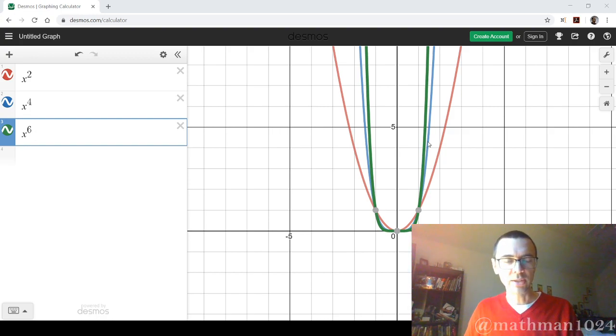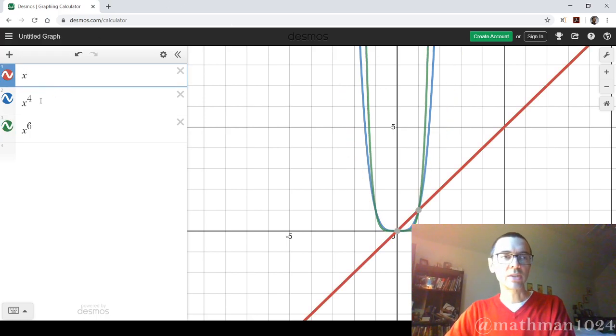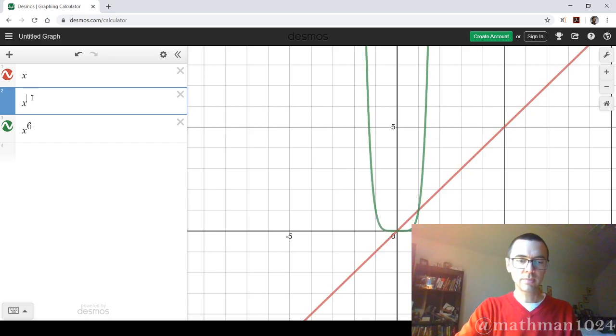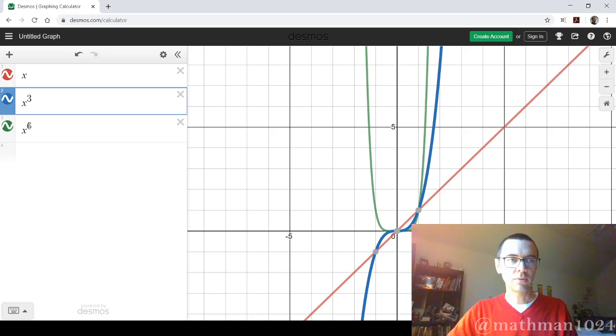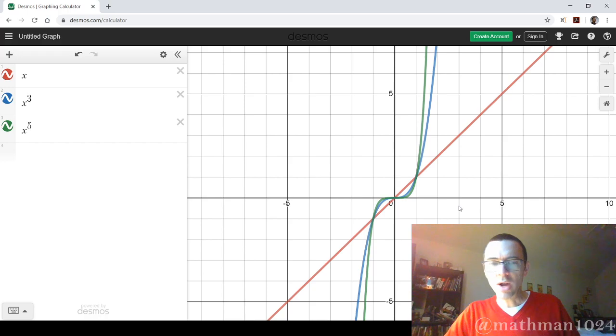Now, let's change these guys and see what it looks like when we have things that have an odd power. So things like x, and x to the third, and x to the fifth.